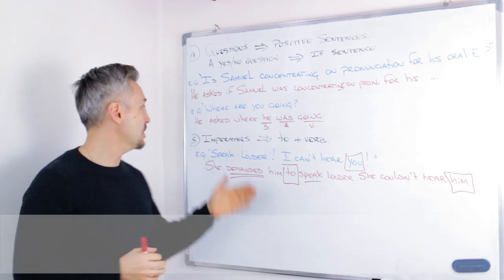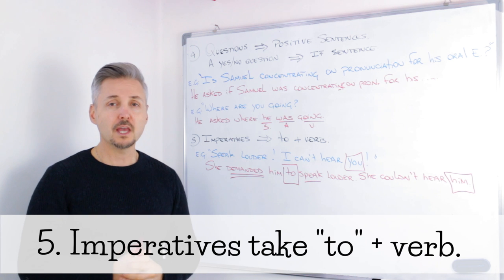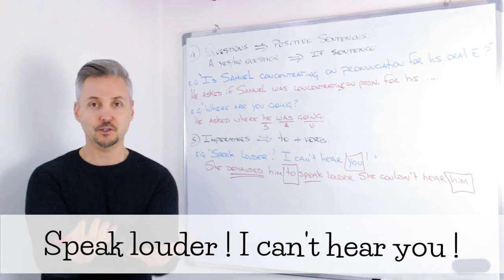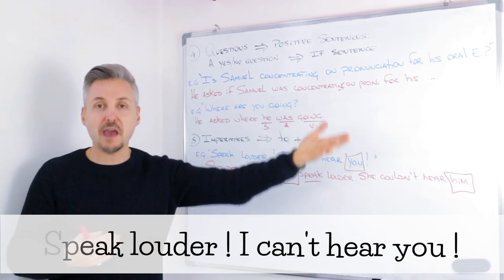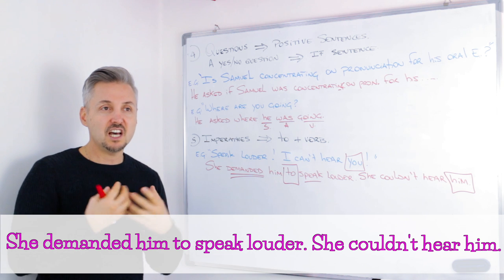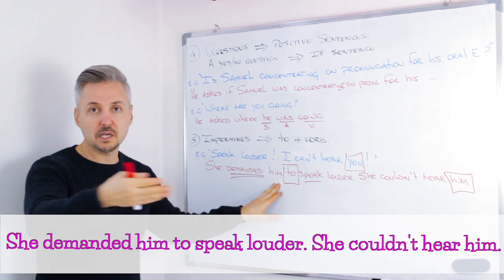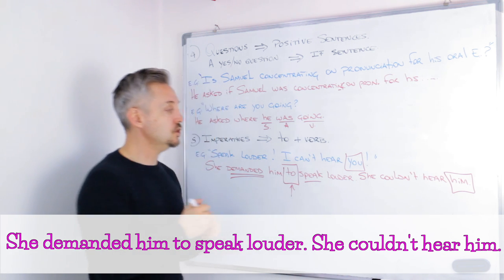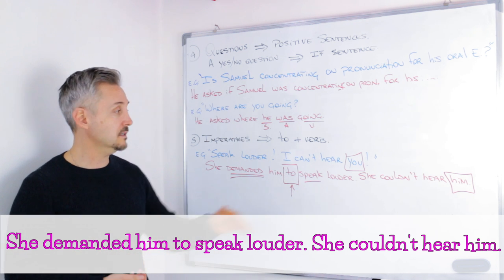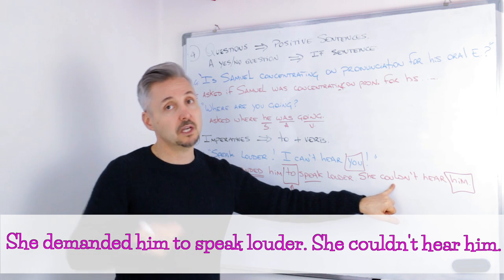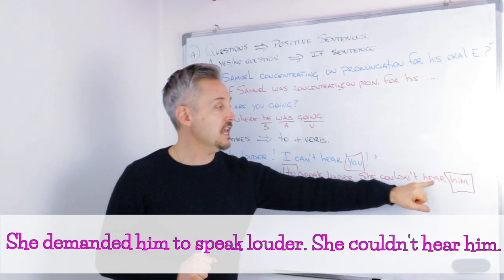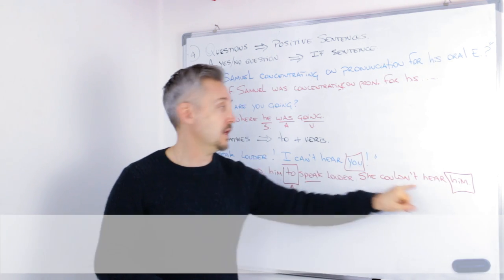The last rule is about imperatives. Imperatives take to plus verb. For example: Speak louder! I can't hear you! She demanded him — using demand to stress that she insisted — she demanded him to speak louder. Can't would go to couldn't, because it's the past of can. She couldn't hear him.